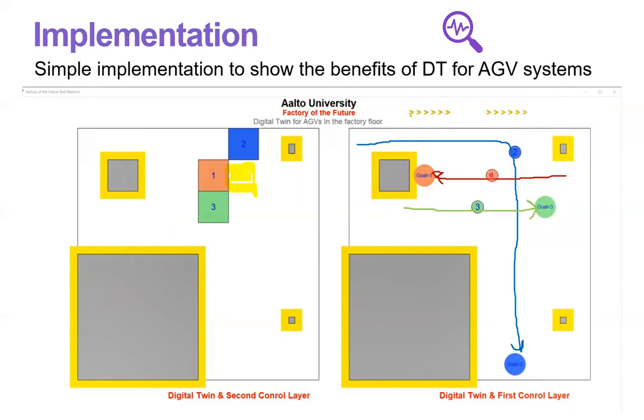So after that, after AGV number one passed the collision area, AGV number two can continue its journey toward destination.